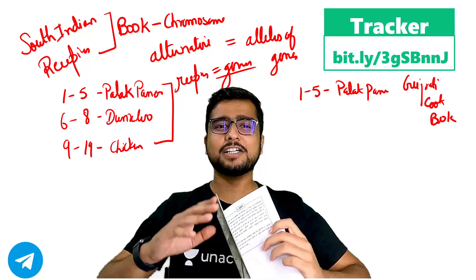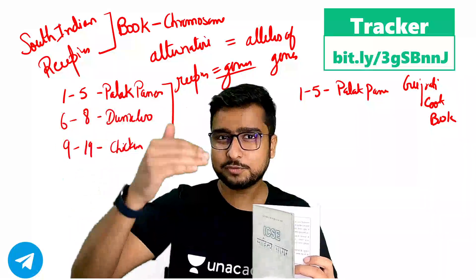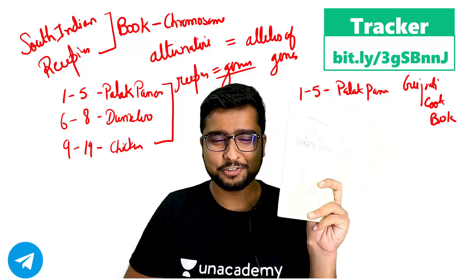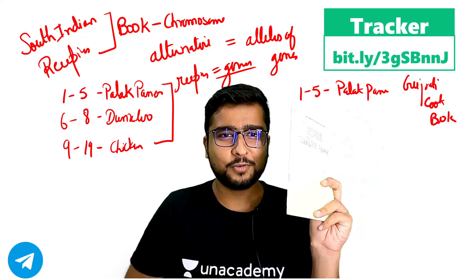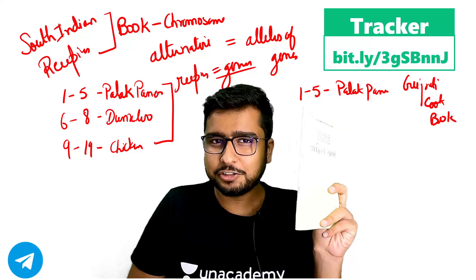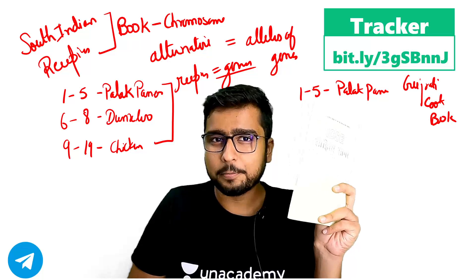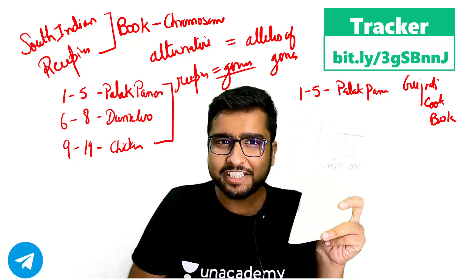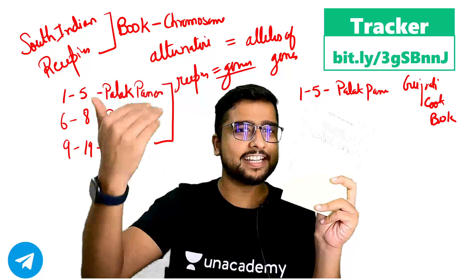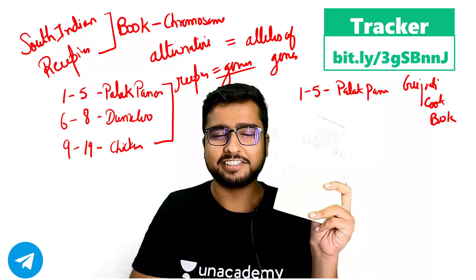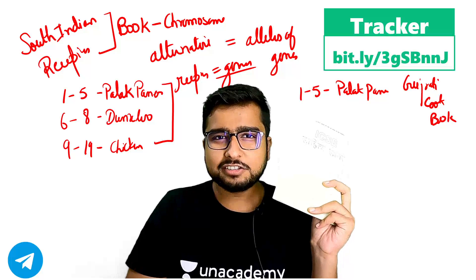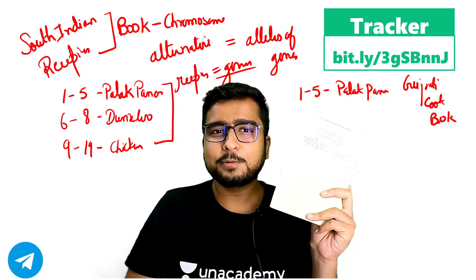Now, we say that we have twenty-three sets of chromosomes because you have one set of twenty-three chromosomes from mom — giving you the recipe for all the characteristics that are inside you. You got one set of books from mom.